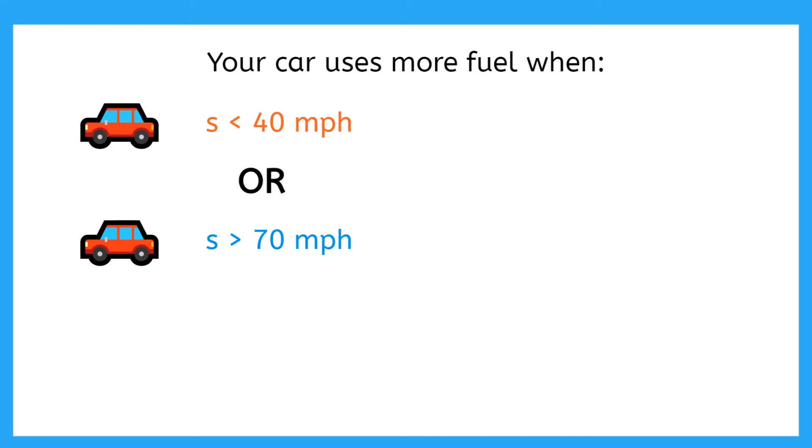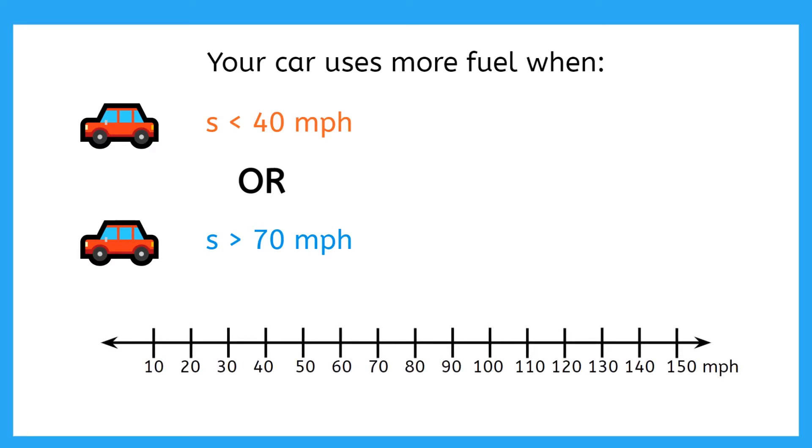We are combining two simple inequalities with the word OR. Now we can plot these two inequalities. Here we have our number line counting by tens. We will have an open circle at 40 and an arrow pointing to the left. All speeds less than 40 miles per hour. And our other inequality is an open circle at 70 miles per hour and includes all speeds greater than 70.